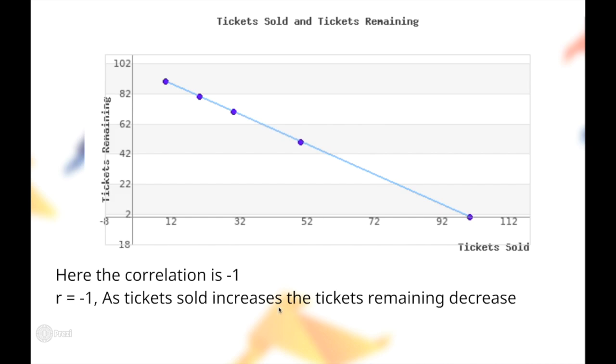Here's the graph for it. The correlation is said to be negative 1, so r equals negative 1. The story on this one is: as ticket sales increase, the tickets remaining decrease.